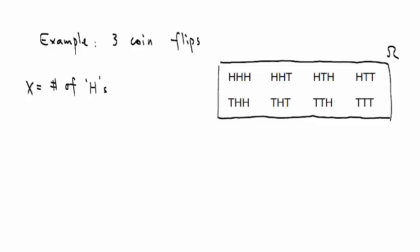Let's look at one example. In some cases, a random variable can actually have an explanation in language. For example, where we look at three coin flips, my sample space omega is these eight possible outcomes, which I prepared here. And let's say X is a random variable — X is equal to the number of heads in these three coin flips.